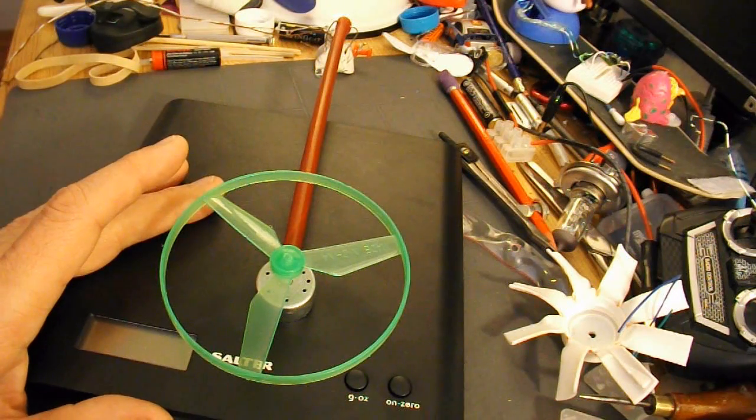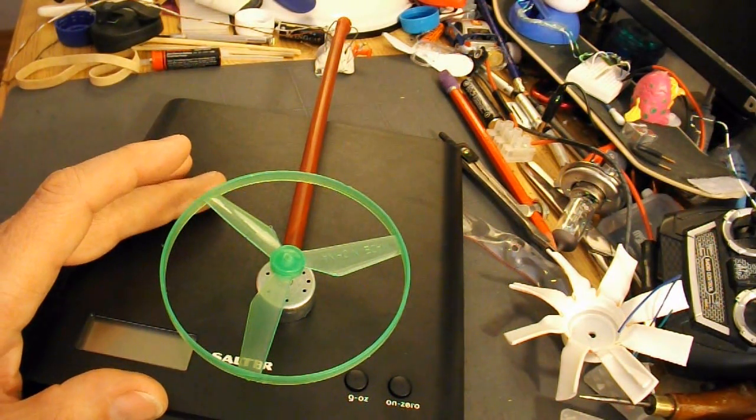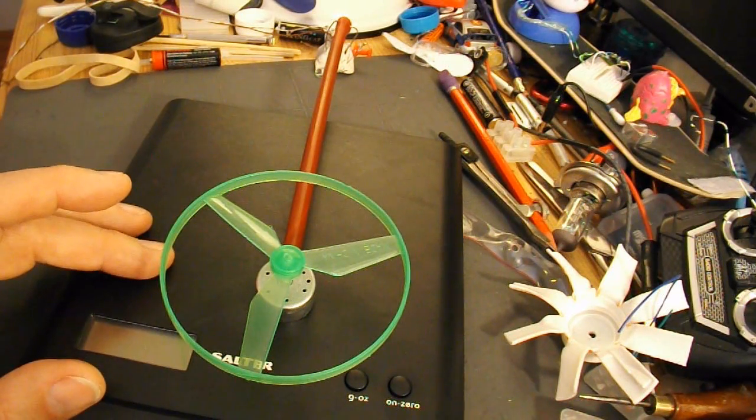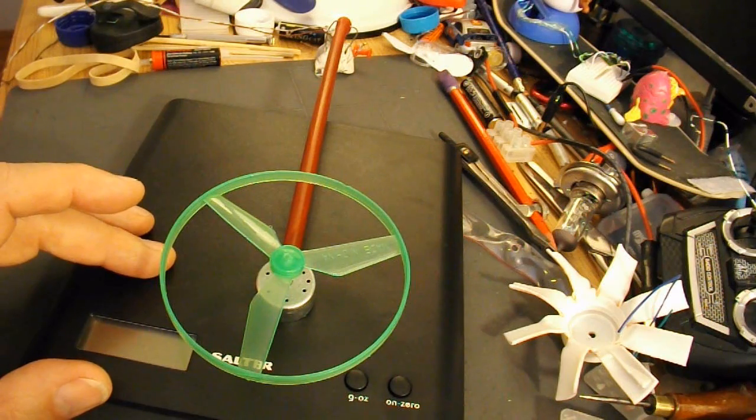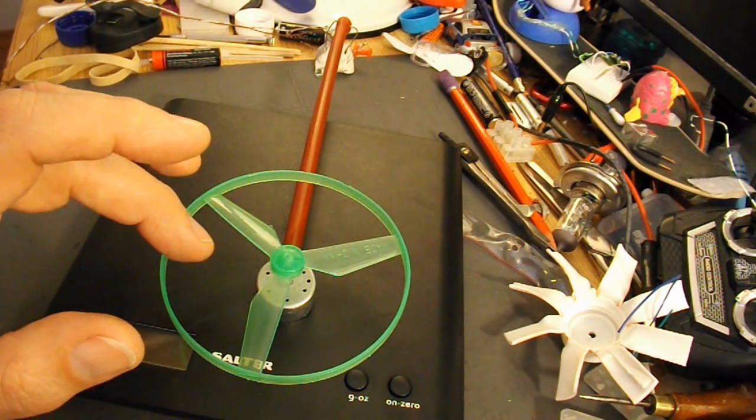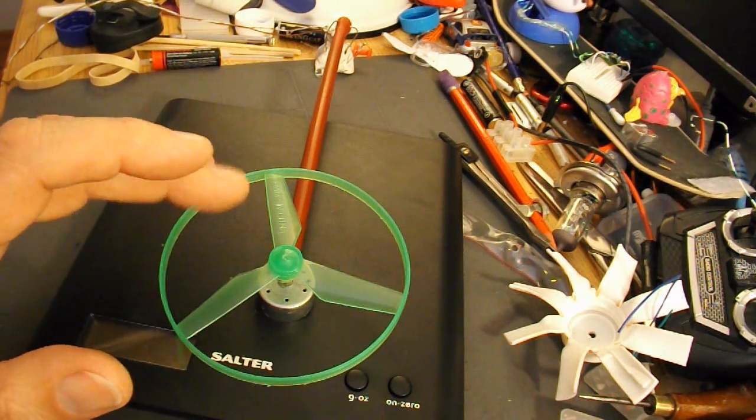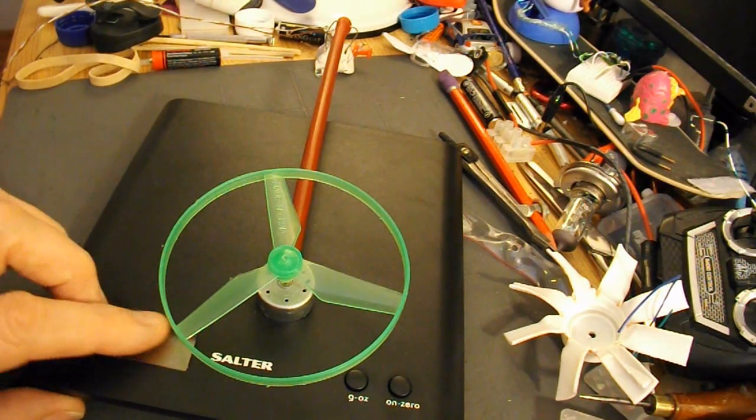Now, the next point was people have commented on that original video that the way I'm measuring the thrust is wrong. And they're right. It is wrong. They're saying that the downwash, downthrust from the propeller is pushing against the surface of the scales, and that's affecting the reading. And yes, it is.